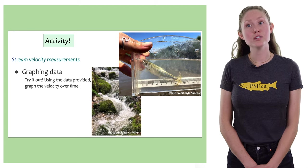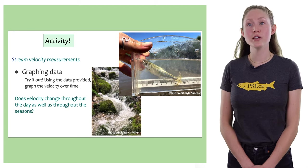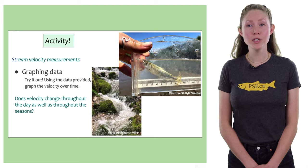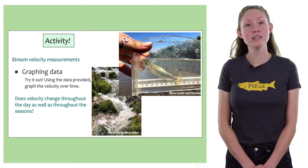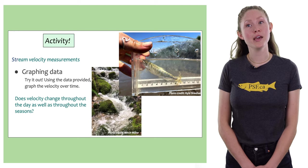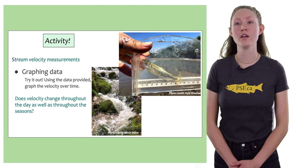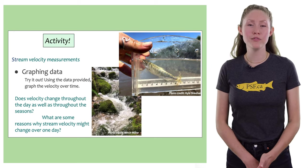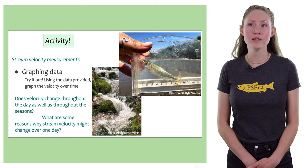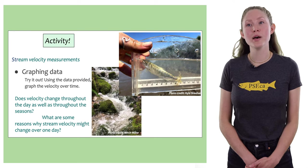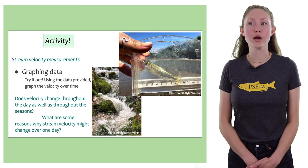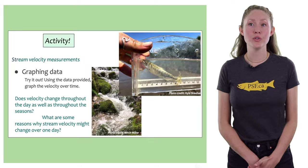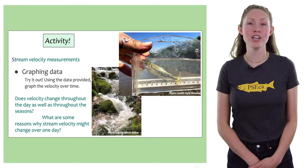Do you think stream velocity changes throughout the day too? See for yourself — we measured stream velocity once every hour for a whole day. Try putting these values into a graph to see how the stream velocity changed throughout the day. What are some reasons why stream velocity might change over one day? Revisit the stream width exercise. What do you think you would see if you measured the wetted width every hour and graphed it with the stream velocity?